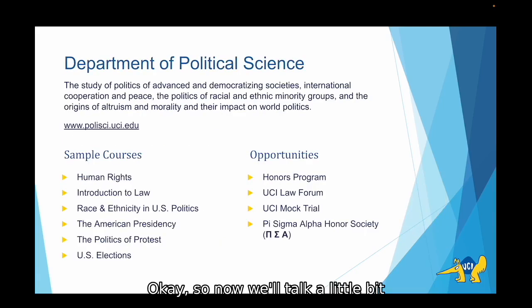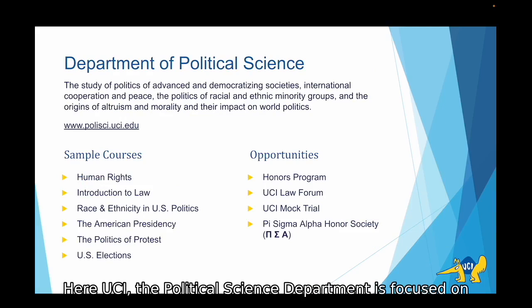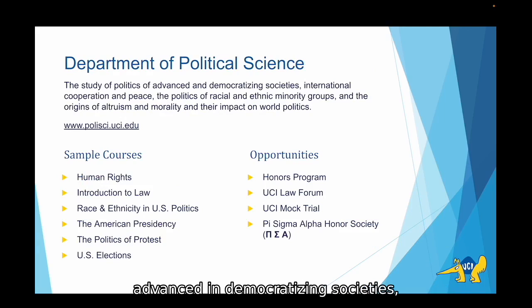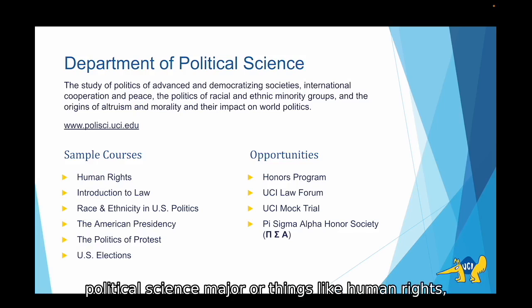Now we'll talk about the Department of Political Science. Here at UCI the Political Science Department is focused on the study of politics of advanced and democratizing societies, international cooperation and peace, the politics of racial and ethnic minority groups, and the origins of altruism and morality and their impact on world politics. Some sample courses you might take as a political science major are things like human rights, introduction to law, race and ethnicity, US politics, and the American presidency just to name a few.